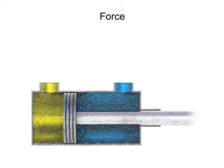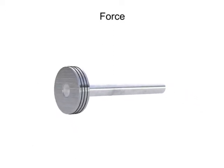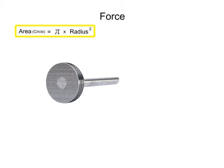For a round piston, the circular area can be determined by a well-known formula: area equals π times r squared. However, most cylinder pistons are identified by their diameter.